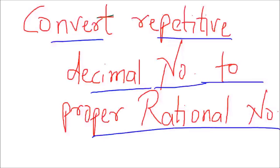You might remember when I discussed the topic number system. In that I discussed each and every term: natural number, whole number, integers, prime numbers, composite numbers, rational and irrational numbers. During that time, I said that rational numbers are the numbers which can be written as a ratio.